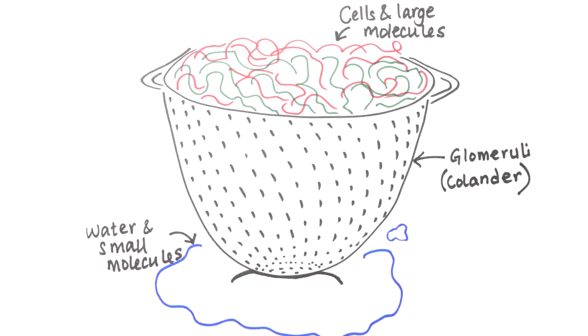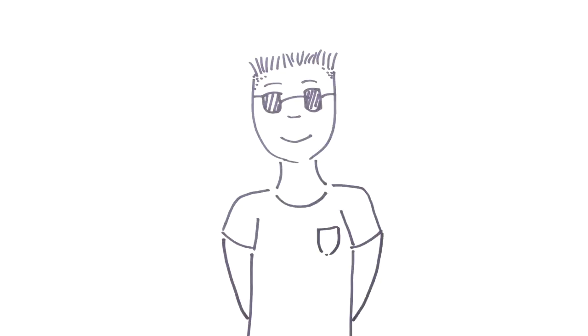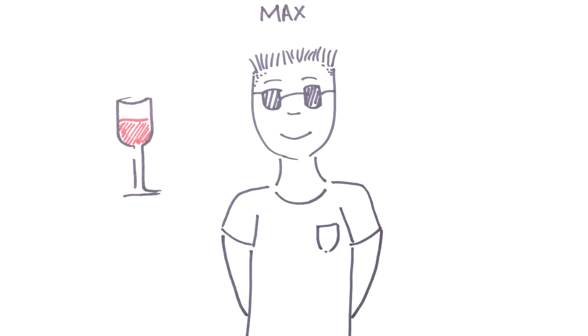If we take Max, a healthy 70 kilogram adult, his glomeruli filtration rate is about 125 mils per minute or a small glass of wine. In one single day his kidneys filter an incredible 180,000 millilitres or 180 litres. That's the equivalent of 240 bottles of wine.